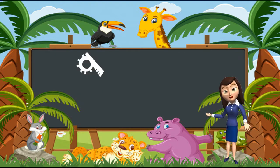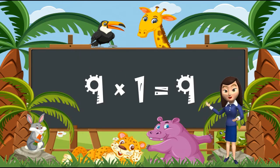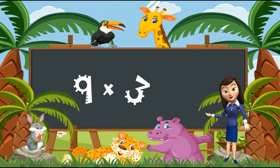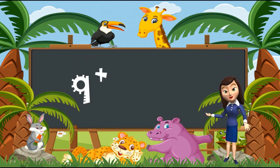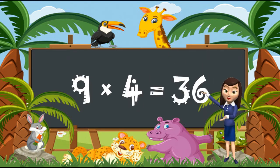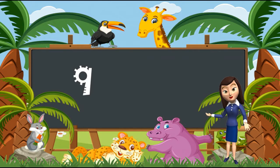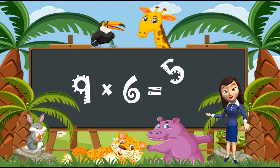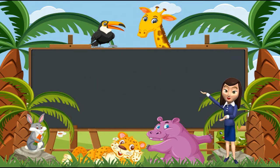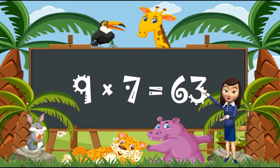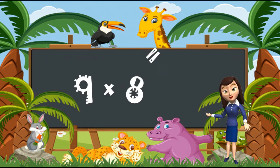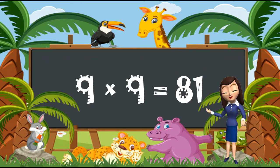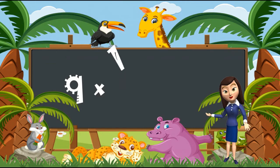Let's start. 9 times 1 is 9. 9 times 2 is 18. 9 times 3 is 27. 9 times 4 is 36. 9 times 5 is 45. 9 times 6 is 54. 9 times 7 is 63. 9 times 8 is 72. 9 times 9 is 81. 9 times 10 is 90.